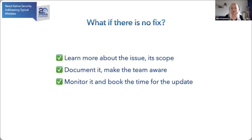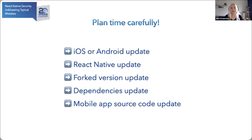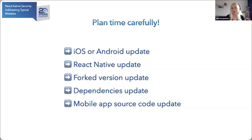Another situation is when a vulnerability is fixed in the native platform — iOS or Android. For example, when iOS decided to remove support for UIWebView because it was too vulnerable. You wait for the update for the native part, then wait until Facebook releases the React Native update. Some teams have a forked version of the React Native repo — they need to update their fork, then wait until all dependencies are updated, and only then can you update your own source code. It's very time-consuming. The main rule here is: always plan your time for updates.